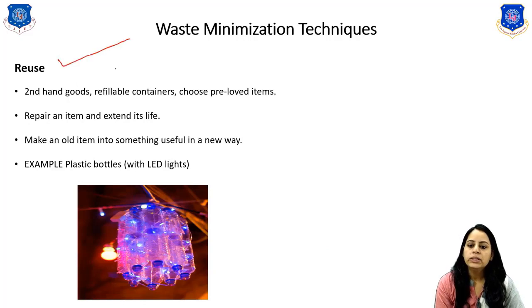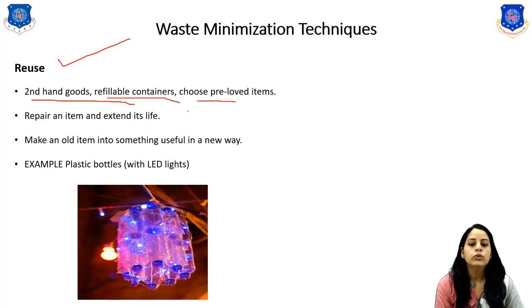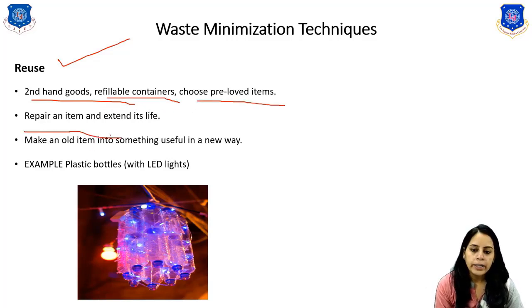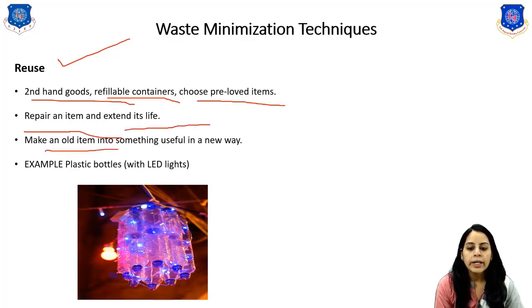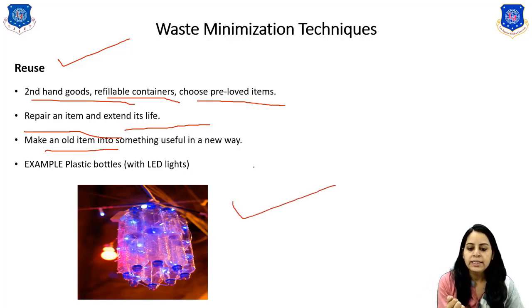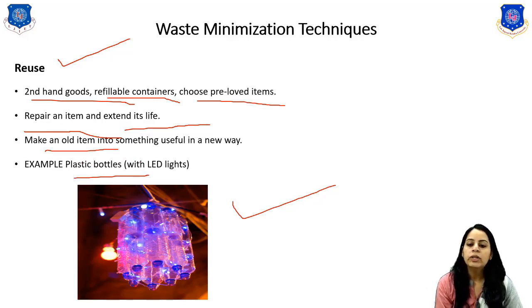The next technique is reuse, which includes second-hand goods, refillable containers, and choosing long-life items. The idea is to repair an item and extend its life, or make an old item useful in a new way. An example shown is a plastic water bottle reused with LED lights.